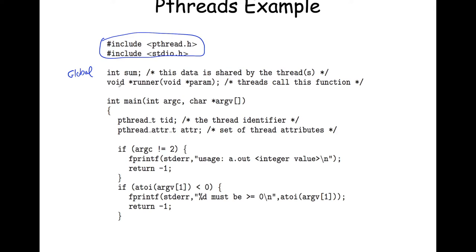In C you have to declare or define a function before you can use it. If the definition of the runner function comes after the place where it's used, you handle that with a function prototype. This tells your program the name, the return type - void star - and the parameter, void star. This runner function will be the entry point for our thread - the starting place for that execution context we're going to create.